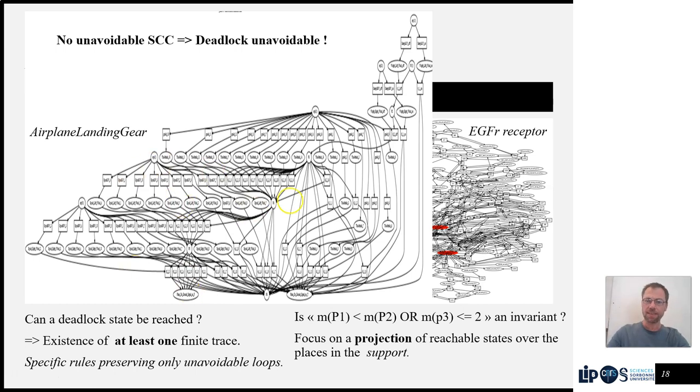Otherwise, when there are SCCs, we're going to keep the SCCs and prefix of these SCCs that can put tokens in them, and then we're going to discard anything that is in a suffix of an SCC.